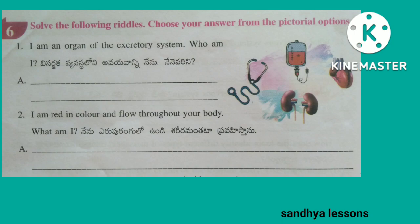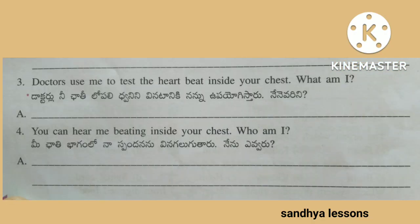Sixth, solve the following riddles. First: I am an organ of the excretory system — who am I? Kidneys. Second: I am red in color and flow throughout your body — what am I? Blood. Third: Doctors use me to test the heartbeat inside your chest — what am I? Stethoscope. Fourth: You can hear me beating inside your chest — who am I? Heart.